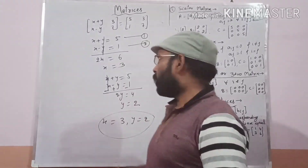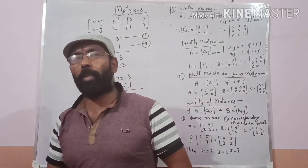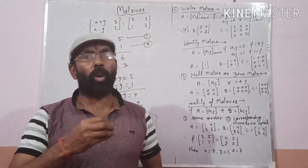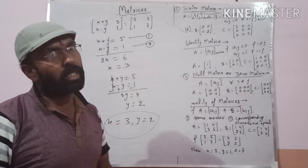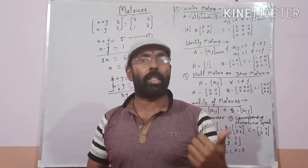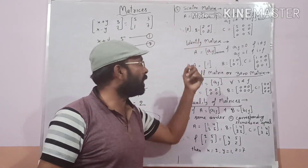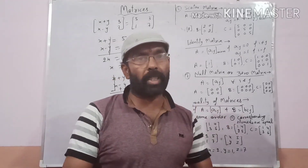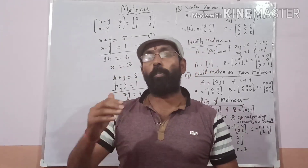In this video, we have discussed the matrix: what is the meaning of matrix, how to determine the order, number of rows and columns, and types of matrices including row matrix, column matrix, square matrix, diagonal matrix, scalar matrix, identity matrix, null matrix, and equality of two matrices. In the next video, we will discuss the operations of matrices.